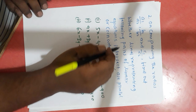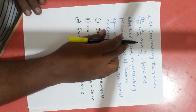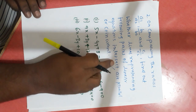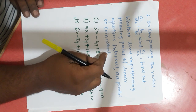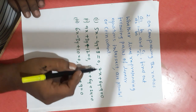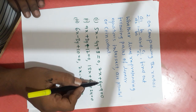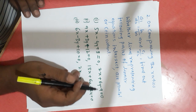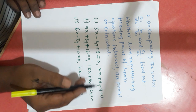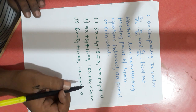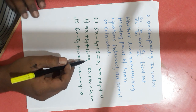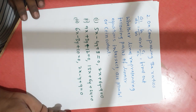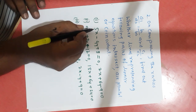In the second main question, by comparing the ratios a1 by a2, b1 by b2, and c1 by c2, we determine whether lines are intersecting, parallel, or coincident. If a1 by a2 is not equal to b1 by b2, they are intersecting lines. If a1 by a2 equals b1 by b2 equals c1 by c2, they are coincident lines. If a1 by a2 equals b1 by b2 but not c1 by c2, they are parallel lines.